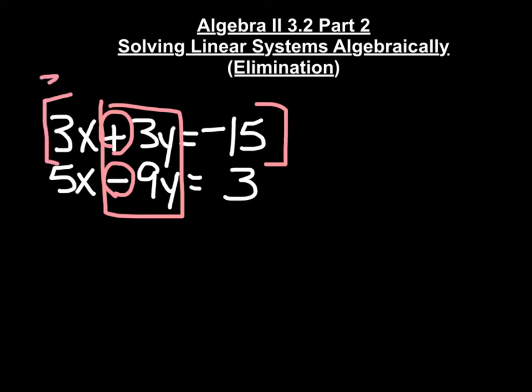I want to multiply it by 3 because when I distribute that 3 through the whole equation, it's going to give me a positive 9y. So let's do that and go from there.